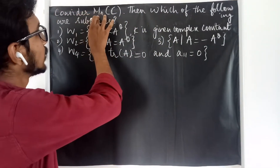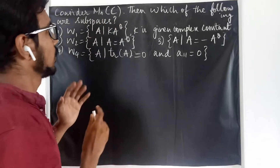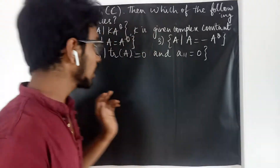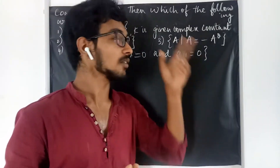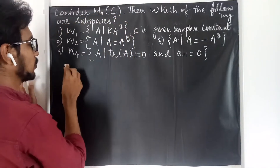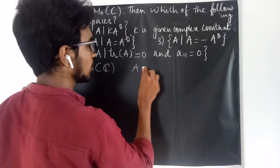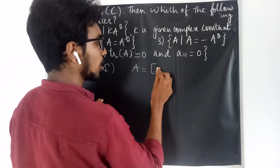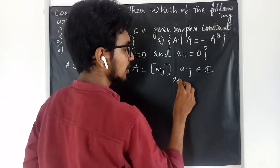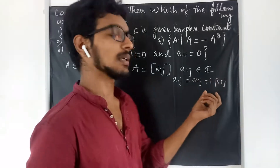Here they have given us to consider M_N of C. What do we mean by M_N of C? This is going to be the set of all M cross N matrices with complex entries, considered over the field of complex numbers. So if you take any element A in M_N of C, all the entries are going to be complex.